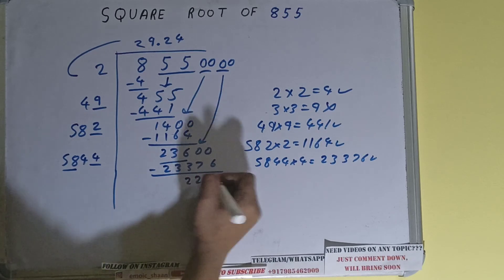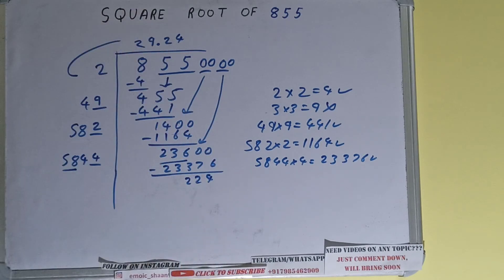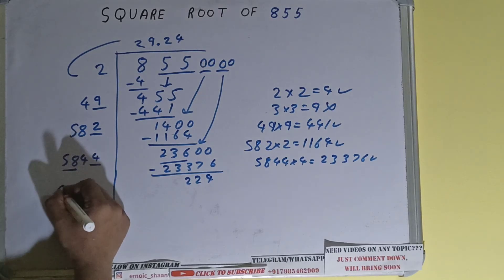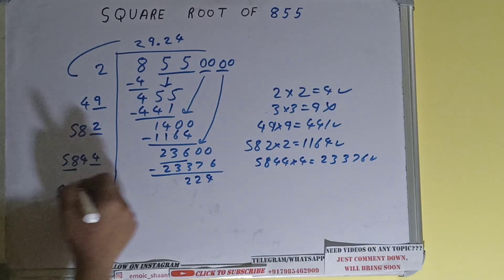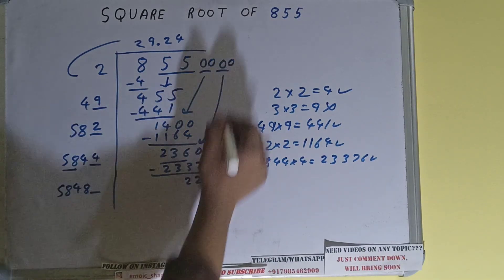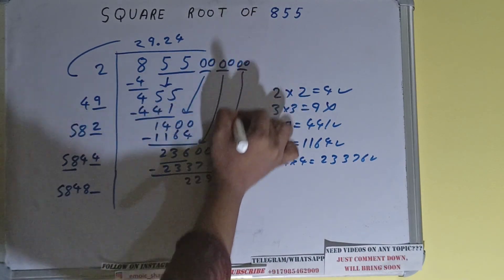Now 5844 into 4, so add both. 5844 plus 4 will be 5848 and one digit extra. And this number we need to make it big, so bring the next pair down and it will become 22400.